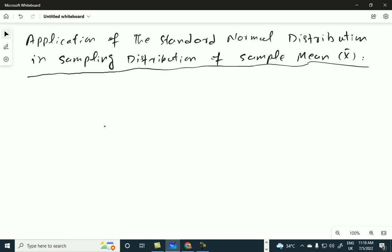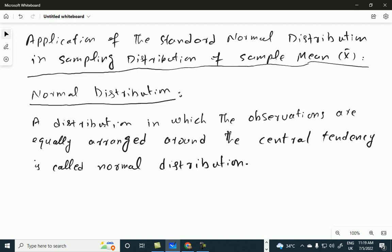First of all, we need to understand what is normal distribution. So let us define it. Normal distribution is a distribution in which the observations are equally arranged around the central tendency.